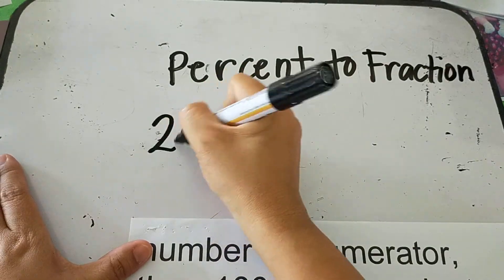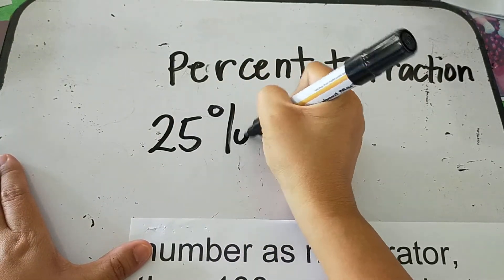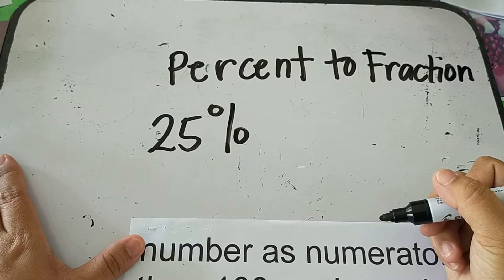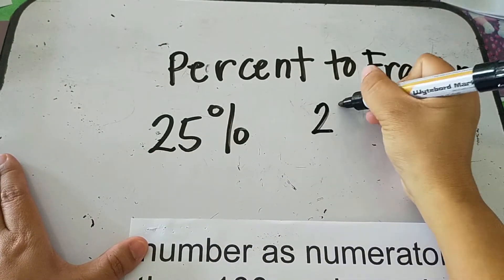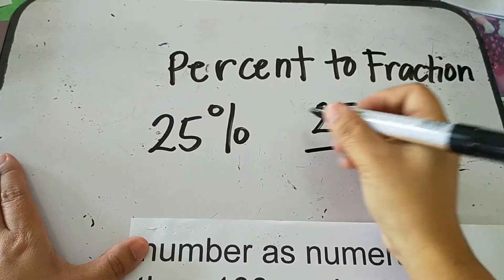Okay, so let's say 25 percent. How are we going to write this in fraction form? So this 25, this will be the numerator.